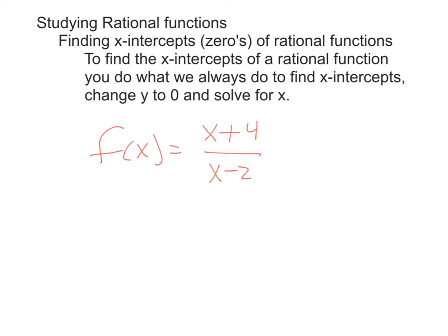Okay, so what we want to do here is be able to find the x-intercepts, or the zeros, of rational functions. This is the same as it has been for every single function we've ever studied. To find the x-intercepts, or the zeros, of a rational function, we will let the y be zero, which this is just a fancy way of saying y. So this entire side is zero.